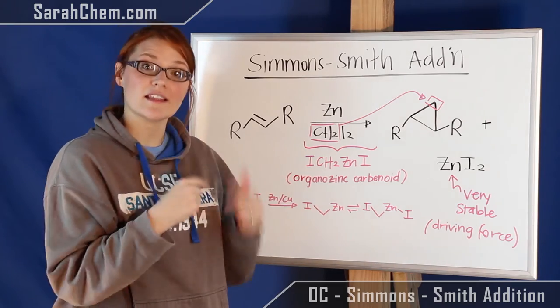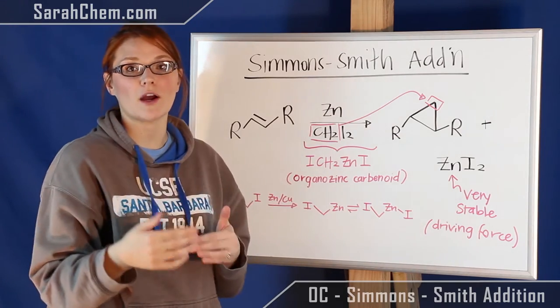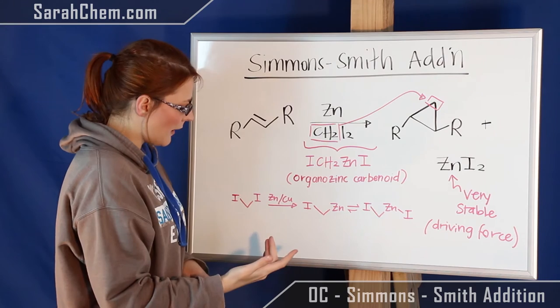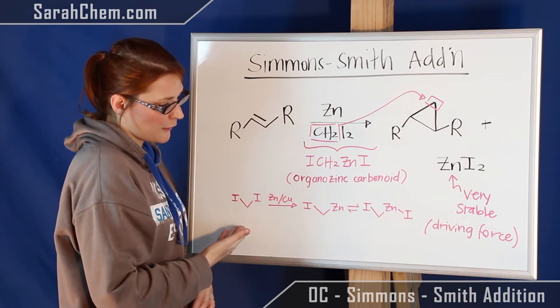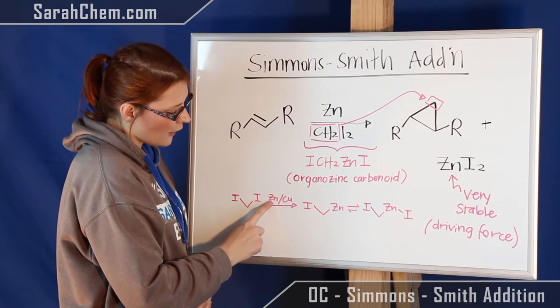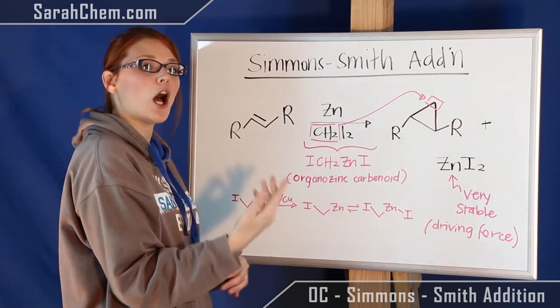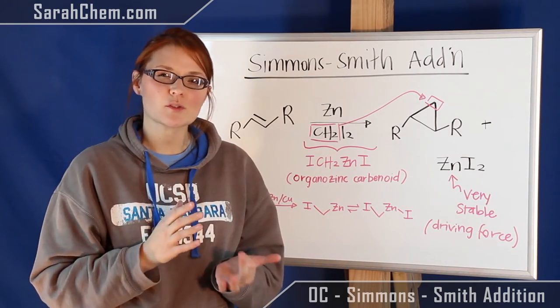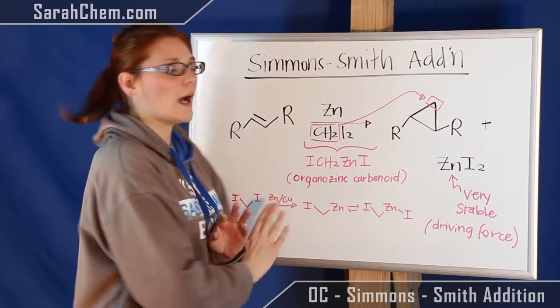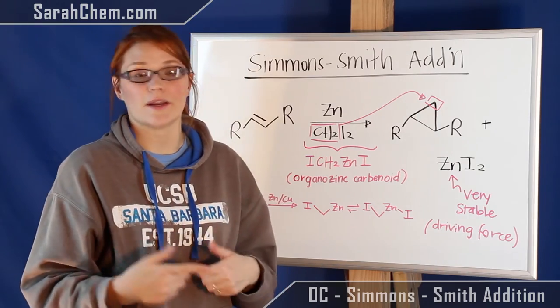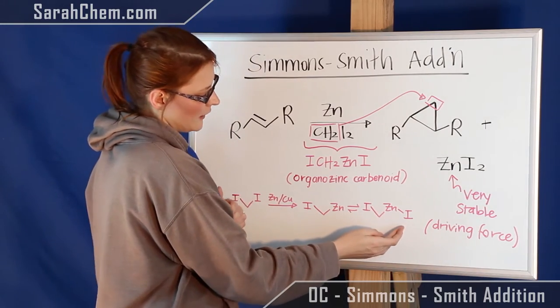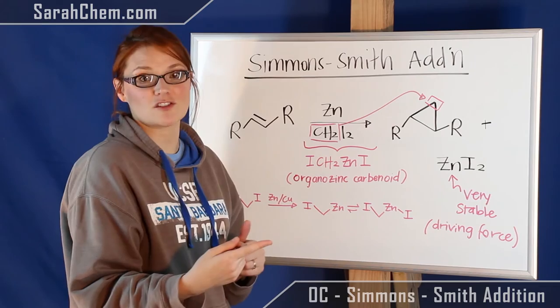which is actually what is going to be used in the mechanism to form our final product. So one thing to keep in mind is, if you're thinking about this part of the reaction, this will often say zinc slash copper. So the copper is sometimes written, sometimes not. All the copper does in this reaction is accelerate it, so it makes this organozinc carbenoid a lot faster.